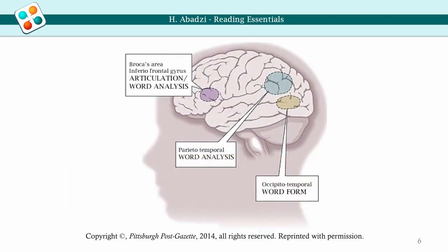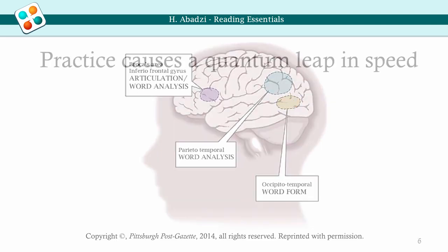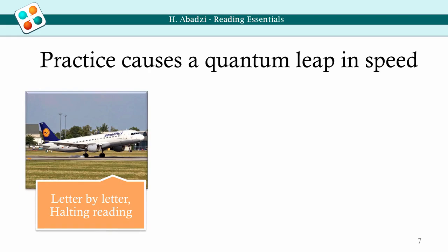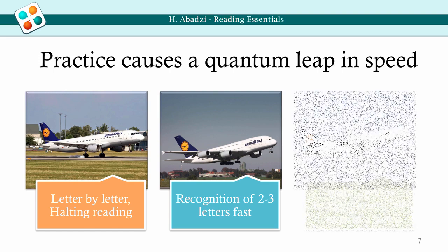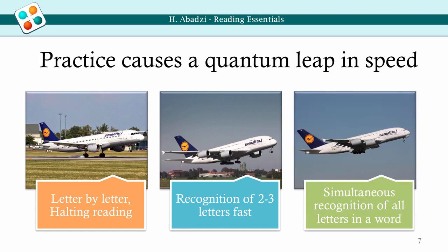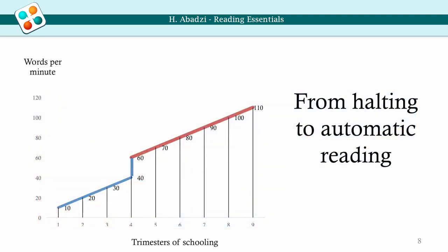Brain imaging shows that halting readers activate various areas related to letter recognition. As speed increases with practice, an area gets activated approximately behind your left ear, called the visual word form area, or fusiform gyrus. It is normally used to recognize faces and shapes. The process is more like an airplane taxiing on a runway and then taking off. While on the ground, we decode text laboriously, letter-by-letter. When the visual word form area is sufficiently activated, reading speed rises abruptly — like an airplane taking off. By cruising altitude, we recognize words as if they were faces. Therefore, reading fluency does not develop in a linear fashion.